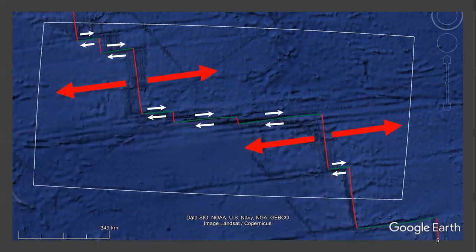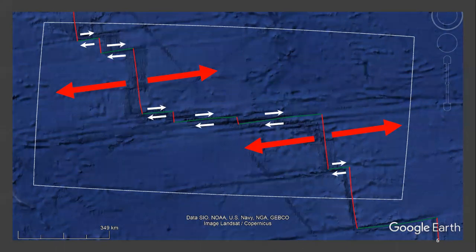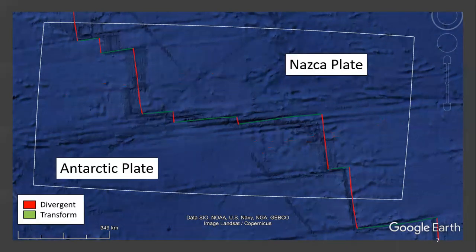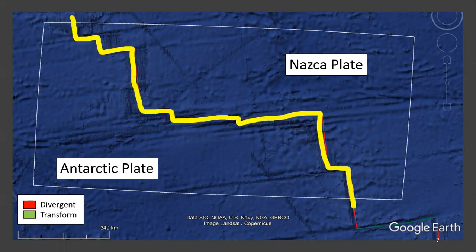Hopefully, you can now see that if you look at our plate boundary as simply two large plates moving away from each other, then all the arrows on each plate must be moving in the same direction. Finally, the exact boundary between the Antarctic and the NASCA plates can be drawn. Even though the boundary consists of both transform and divergent segments, a single trace can define the boundary.